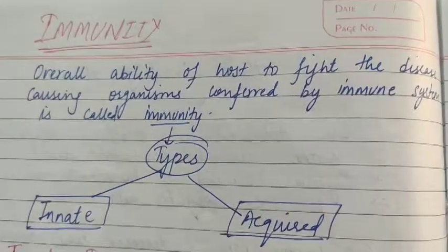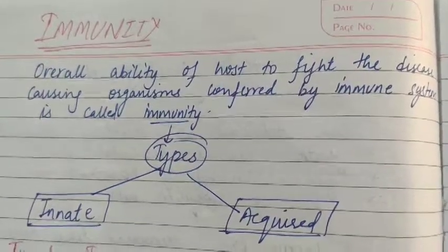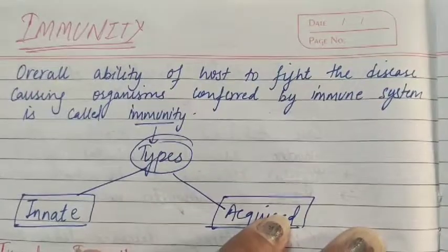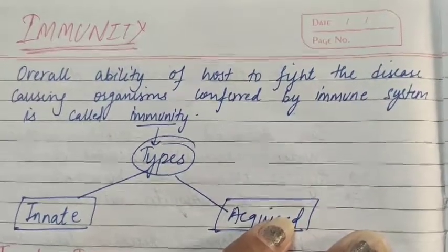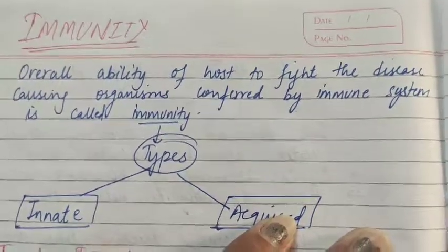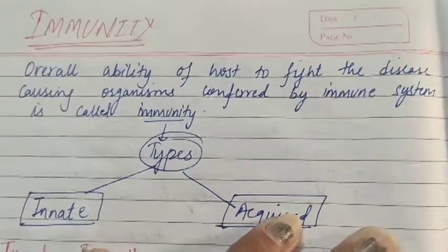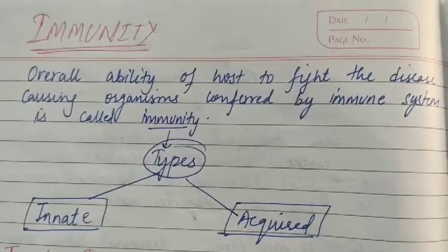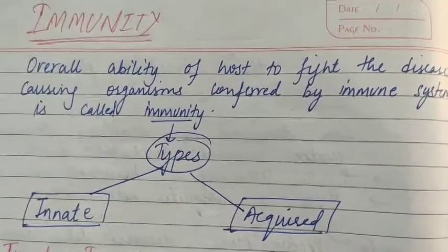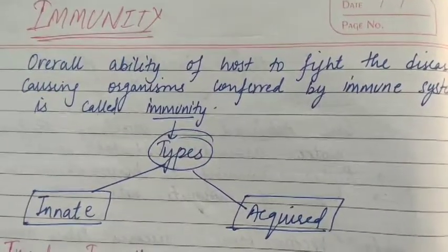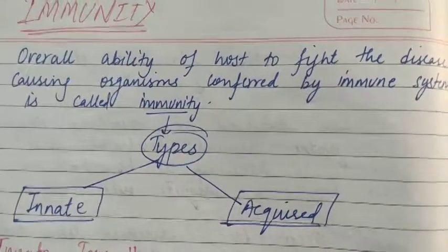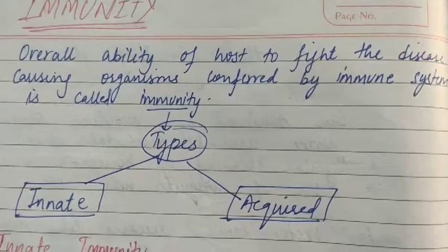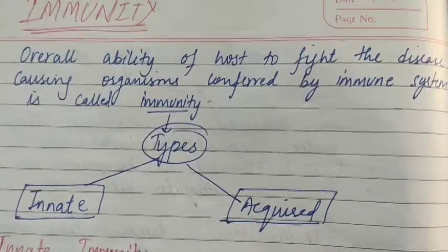The overall ability of a host to fight disease-causing organisms, conferred by the immune system, is called immunity. With the help of our immune system, we fight many diseases — that is called immunity.